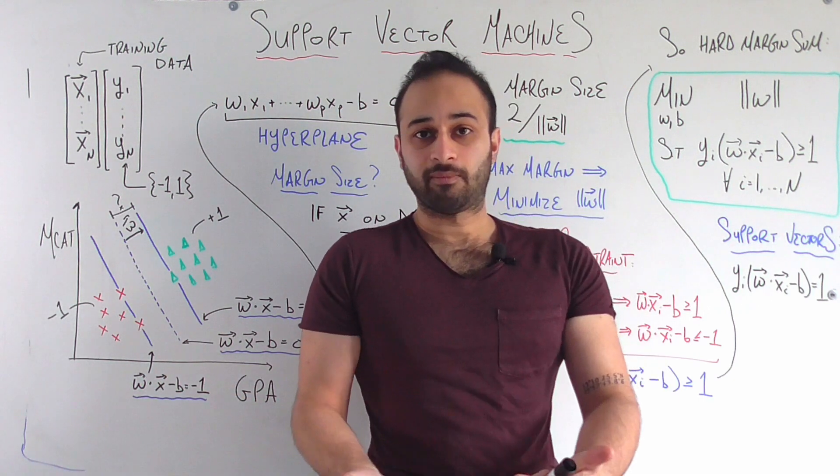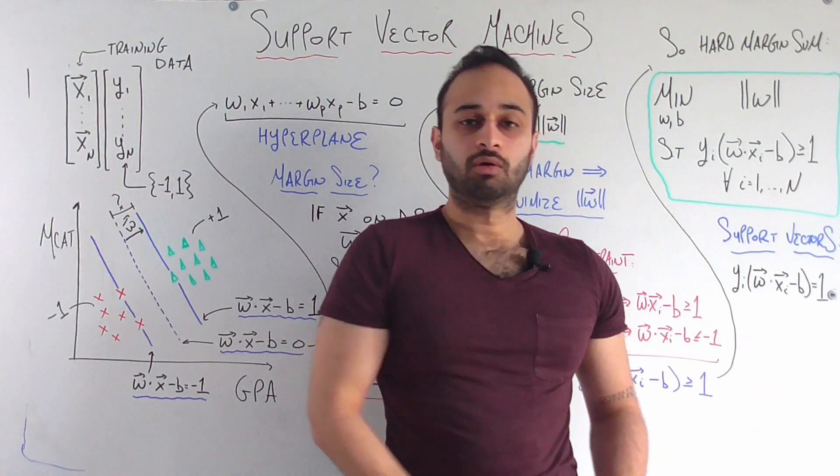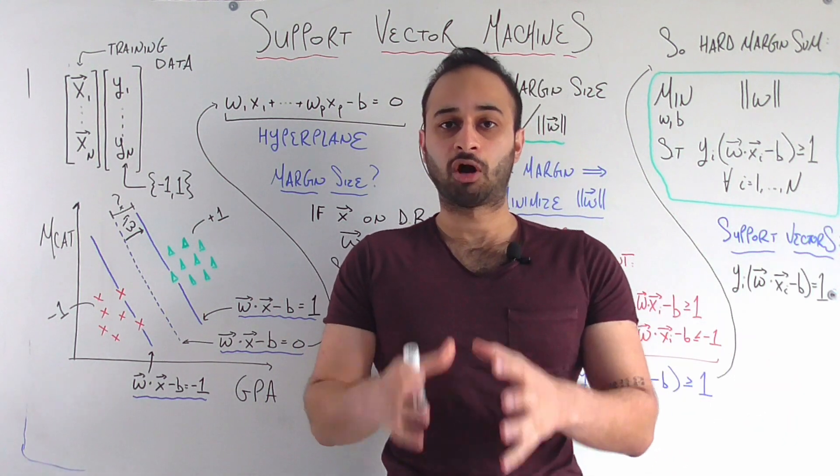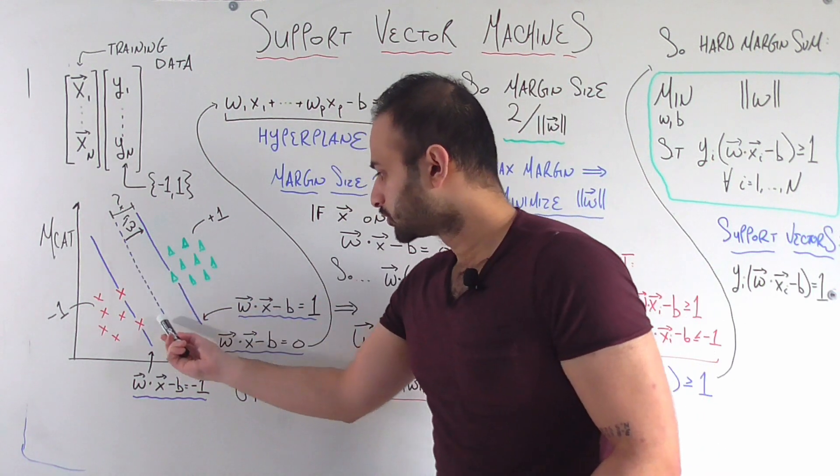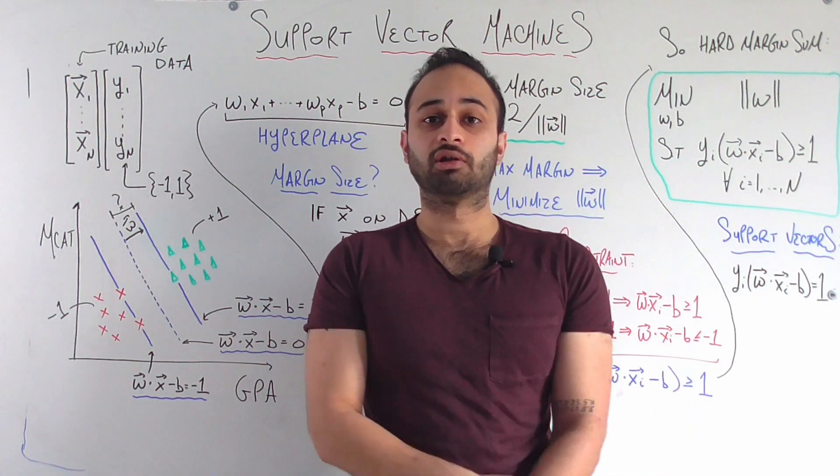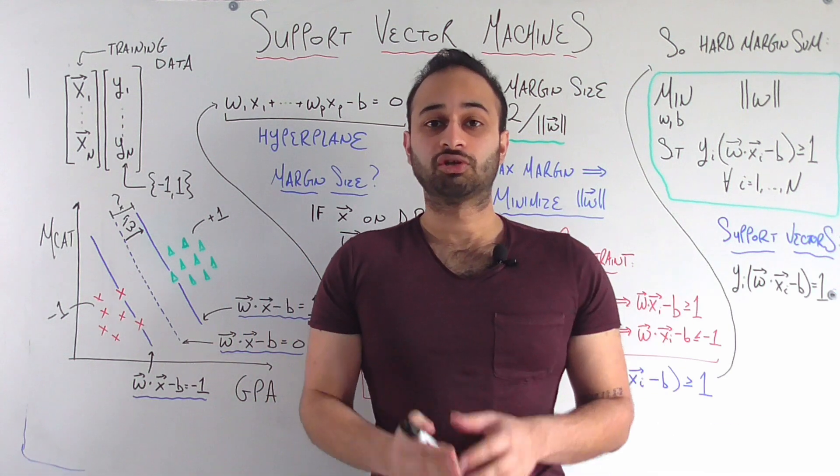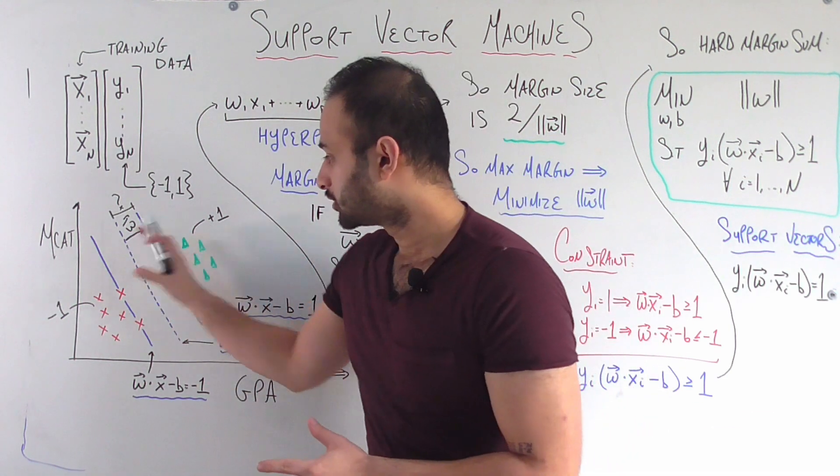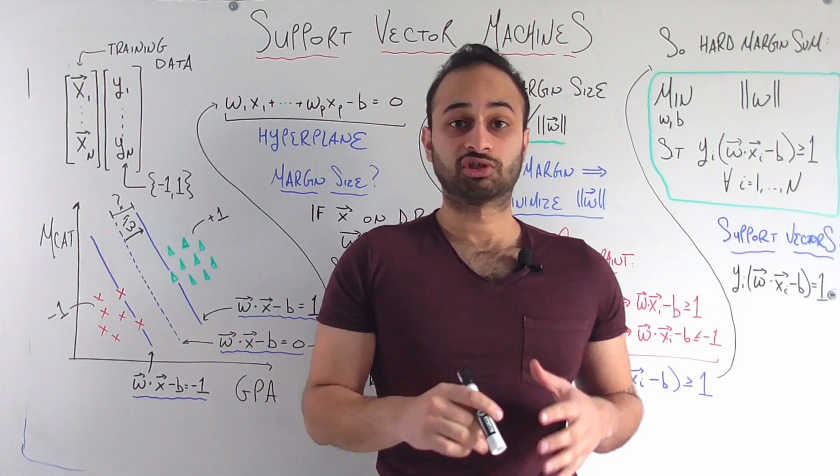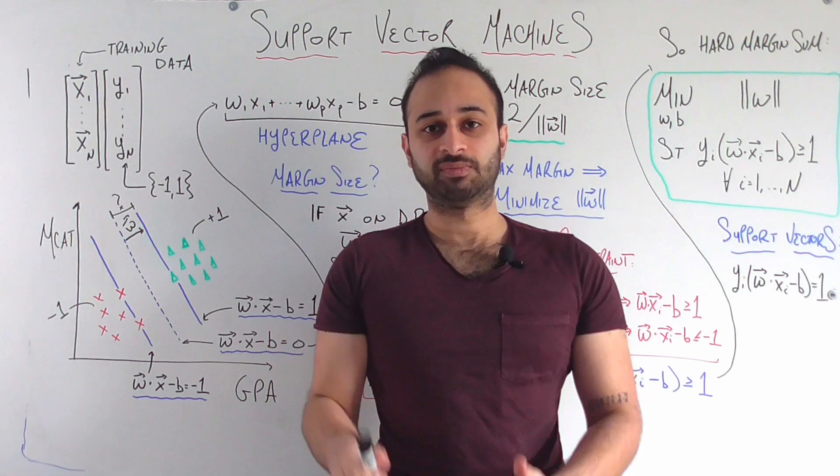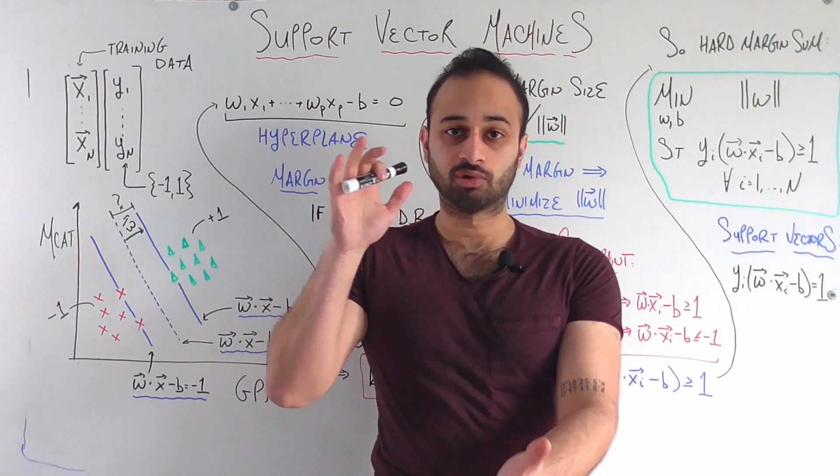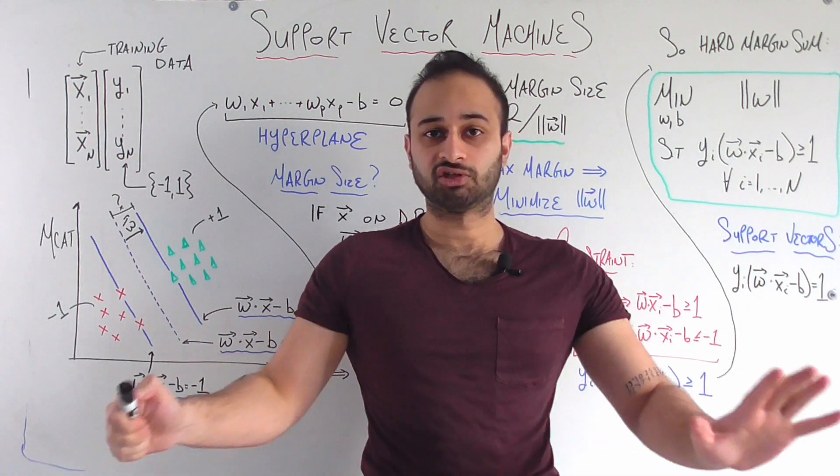Now in the spirit of SVM, as we learned in the intuition video, we want to create a maximum margin classifier, which means that we want to choose a decision boundary. This blue dashed line here is called a decision boundary. We would like to create that such that the space around the decision boundary, which is called the margin, is as big as possible. The reason we want this again is because we want some breathing room between the two classes.